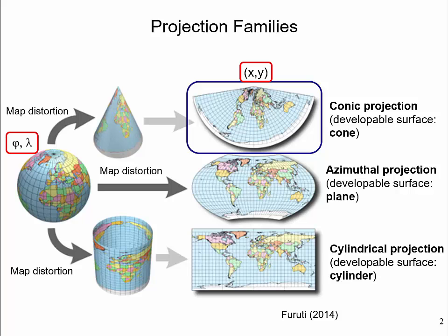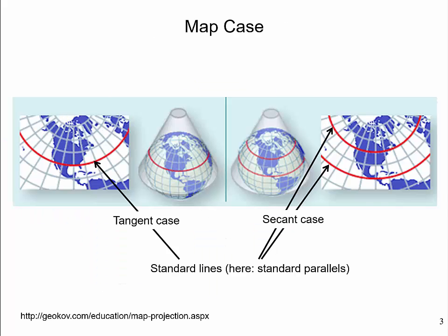This presentation will illustrate how to use the ArcGIS Pro measure tool to determine the map distortion for one specific type of conic map projection, namely the Lambert-conformal conic projection. The principle demonstrated can be applied to any type of map projection implemented in ArcGIS Pro. To better understand the design and specifications of the Lambert-conformal conic projection, the concept of map case is needed.